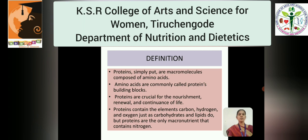Proteins are simply macromolecules composed of amino acids. Amino acids are commonly called protein's building blocks. Proteins are crucial for the nourishment, renewal and continuance of life. Proteins contain the elements such as carbon, hydrogen and oxygen just as carbohydrates and lipids. But proteins are the only macronutrient which contains nitrogen. So, it is composed of carbon, hydrogen, oxygen and nitrogen.